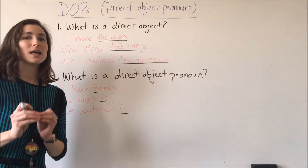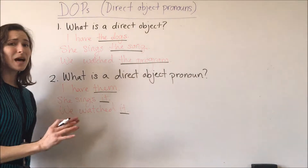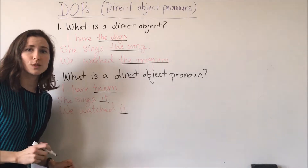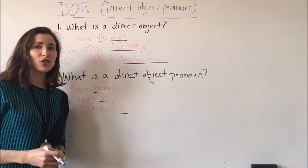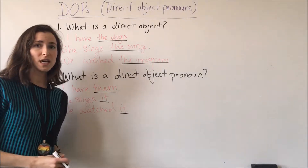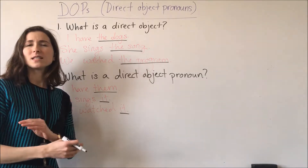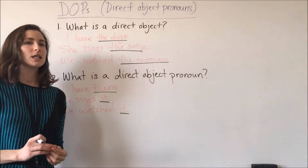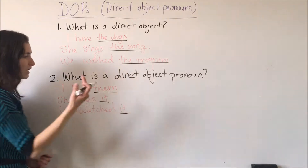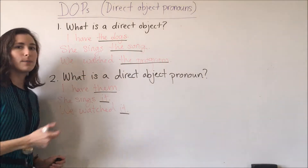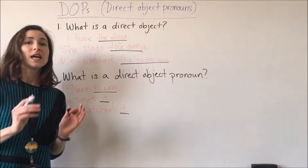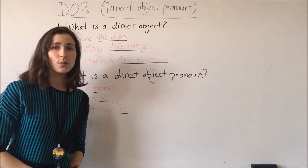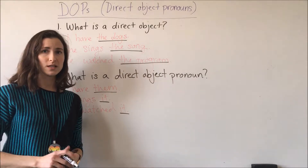Just like in English, in Spanish it is not proper to just throw in a direct object pronoun if you have not already referred to the direct object of that verb, because it's really unclear and up in the air as to what it or them could be referring to. In order to use a direct object pronoun, you need to first in some way refer to the direct object.